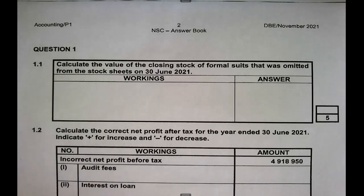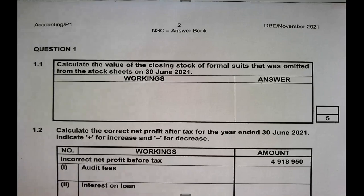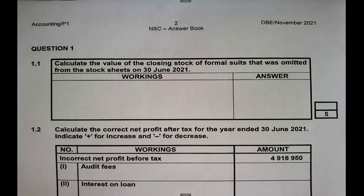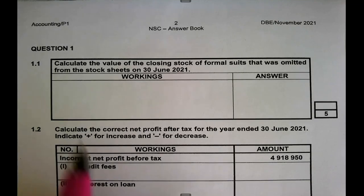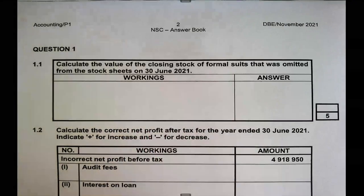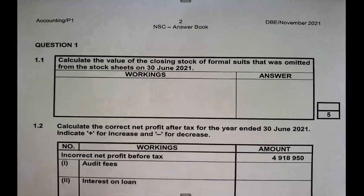We are going to look at how to calculate closing stock using either FIFO or weighted average. This is also part of paper one. Learners often don't go in prepared with this knowledge because they think it's a paper two topic only. But in paper one, you can be asked to calculate the value of closing stock using either FIFO, weighted average, or specific identification.